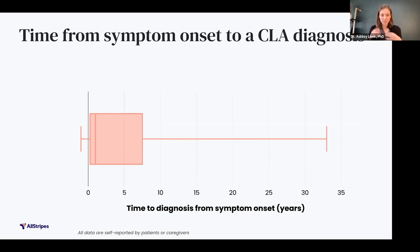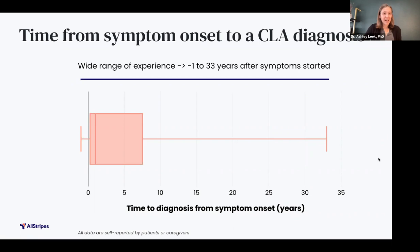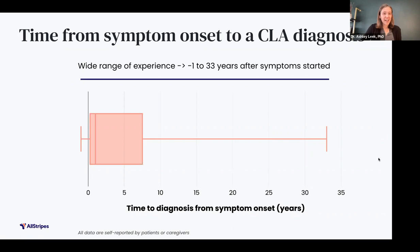Using both reported age at diagnosis and reported age at symptom onset, we could measure how long it took for a patient to receive a CLA diagnosis after their symptoms started. This graph shows that experiences varied widely, indicated by the hash marks at the end of the line. Patients in the cohort received a diagnosis negative one to 33 years after symptom onset. That's a really wide range, meaning some people have been living with the condition for 33 years without knowing what it was.